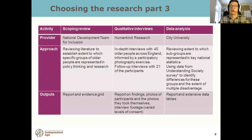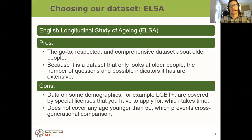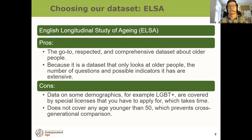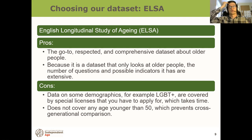We had Humankind Research conducting our qual — 45 in-depth interviews with some follow-ups, plus a photography task — and City University looking at our quant, which was a deep dive into a big dataset. The first decision on the quant side was which dataset to use. We looked at two options. The first was the English Longitudinal Study of Ageing (ELSA), which is the go-to comprehensive dataset about older people with quite focused questions. But we decided against it because you can't get cross-generational comparisons with younger age groups, and there were issues with special licences that would have taken a long time to obtain.